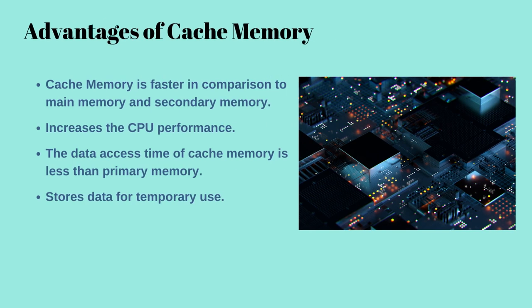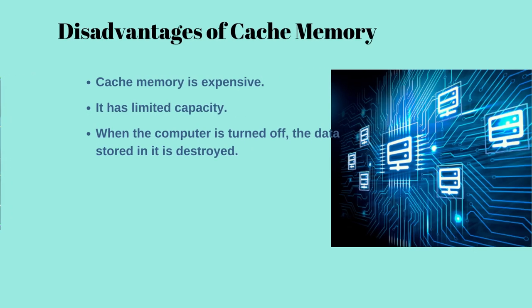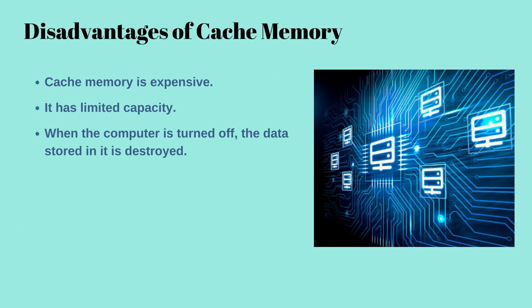Now let's discuss the advantages of cache memory. First, cache memory is much faster than primary memory and secondary memory. Second, it keeps all the data and instructions that the CPU commonly uses, thus increasing the performance of the CPU. Third, it consumes less access time compared to computer primary memory. Fourth, it stores data, instructions, and information for a limited period. The disadvantages of cache memory are: it is more expensive than other memories like primary and secondary memory, and the cost of cache memory increases the price of the computer system. It also has a limited capacity, and if the computer is turned off, the data stored in cache memory is not retained and gets destroyed.